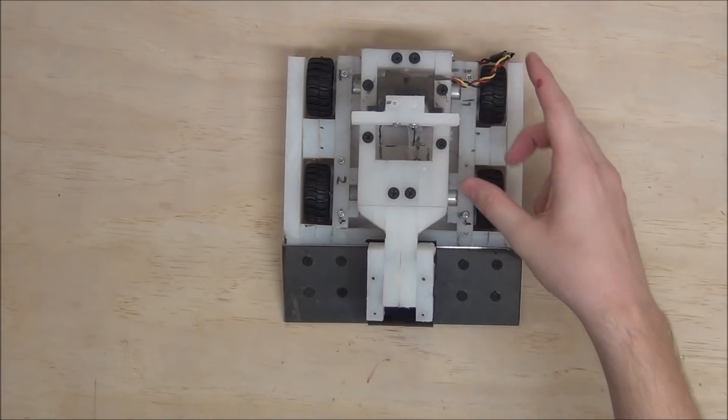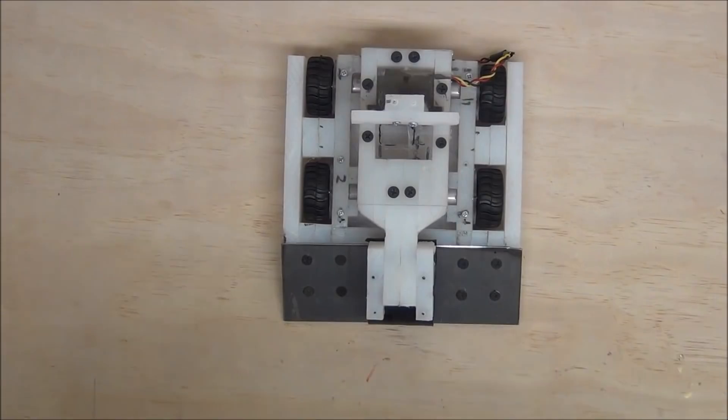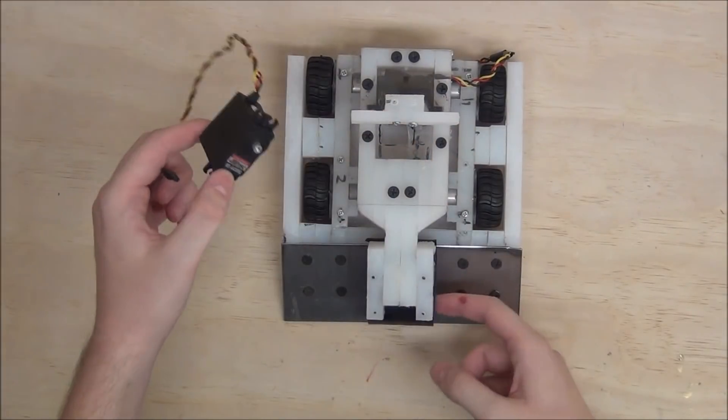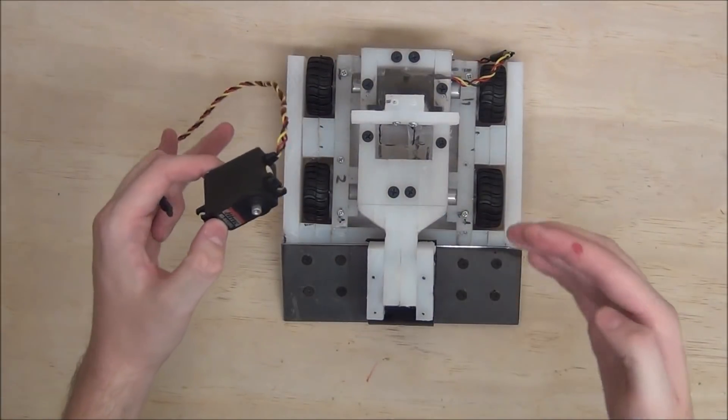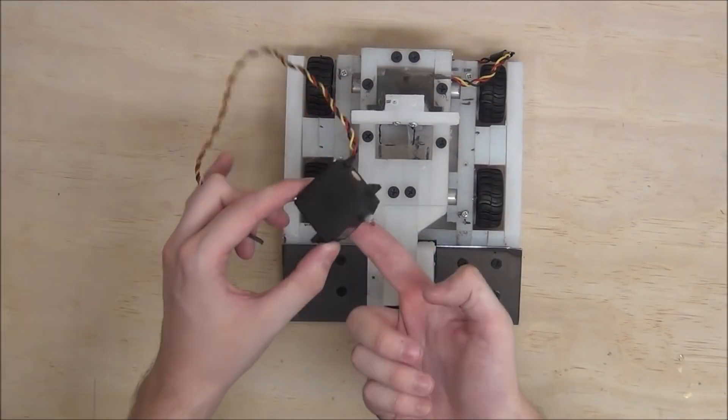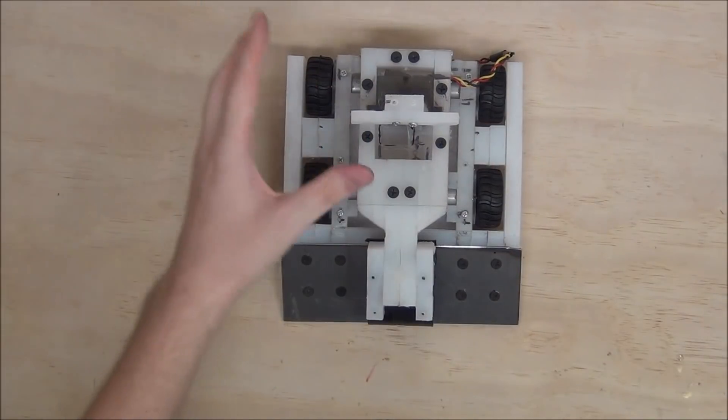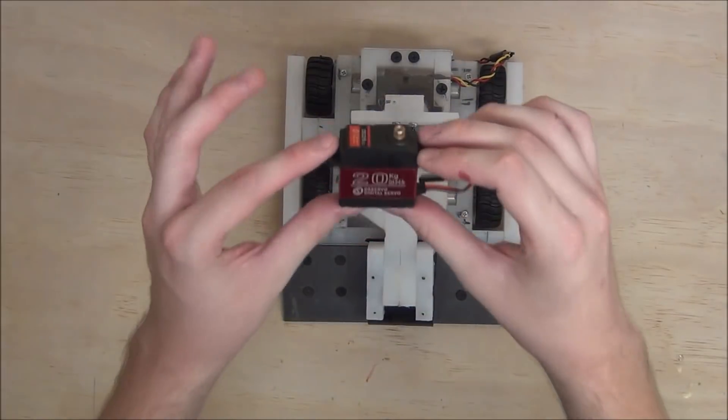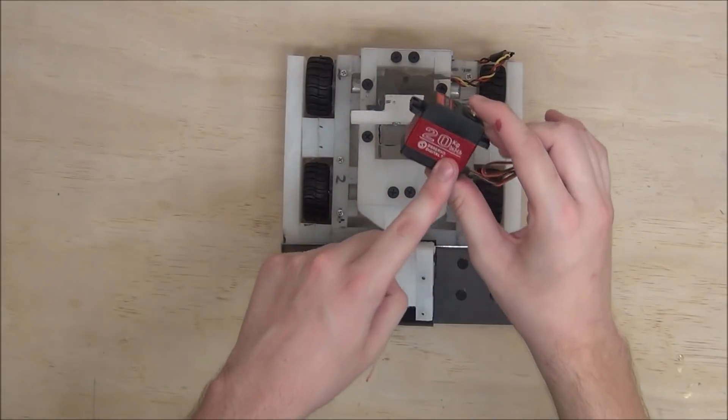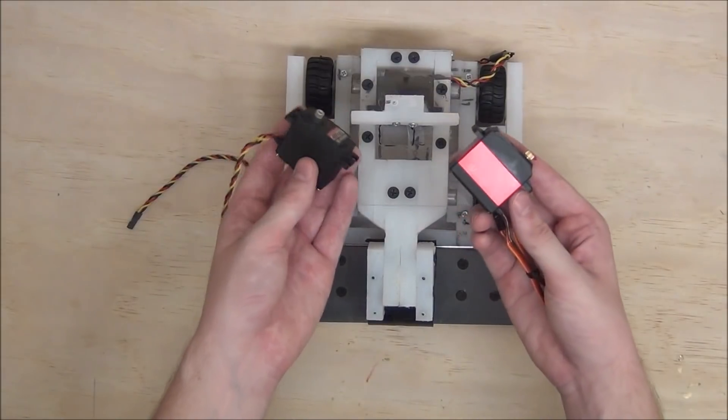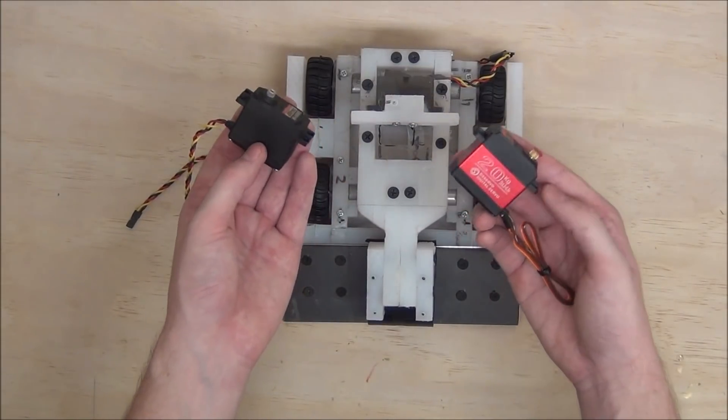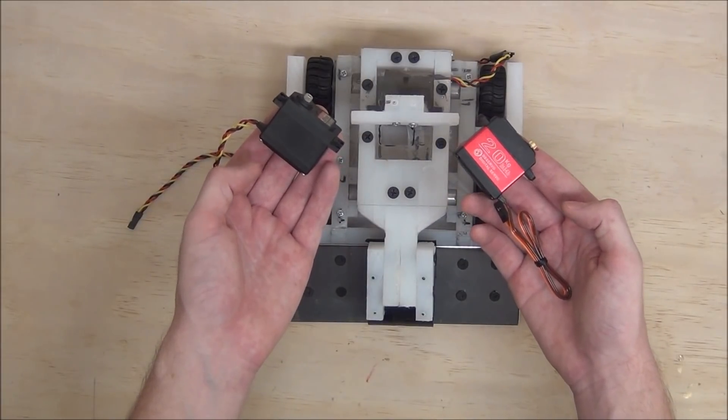Now, before we move on, let's talk about the grabbing arm real quick. I've been using this 9kg high-tech servo to power the arm, and it seems to be working pretty well. However, it's like a $30 servo. Well, I was on Amazon a while ago, and I found this 20kg servo for $16. So it's half the price of the high-tech one, and it's supposed to be twice as strong. That seems like a pretty good deal to me.